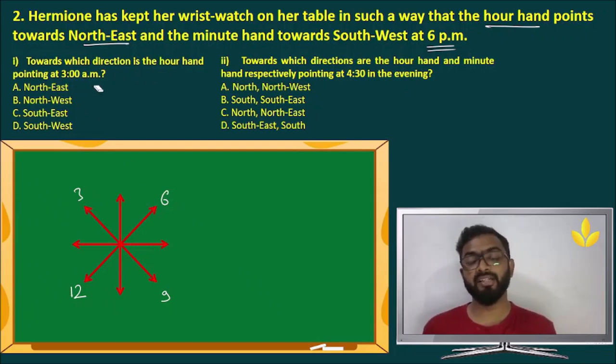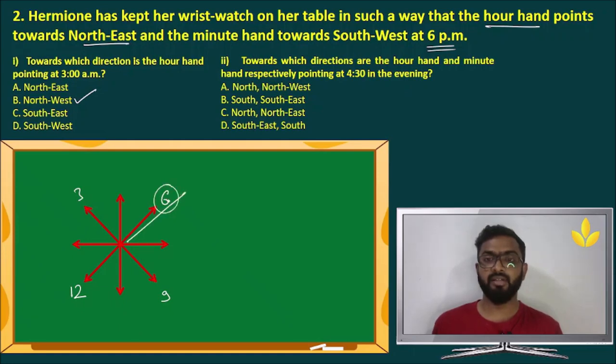Now, the questions. So the watch is kept in such a way that the 12 is here, 6 is here like that. Towards which direction is the hour hand pointing at 3 a.m.? 3 a.m. the hour hand will point at 3. That is in this direction. That is northwest. Answer is B. Question number two. Towards which directions are the hour hand and minute hand respectively pointing at 4.30 in the evening? Always remember, always think about the minute hand first. At 4.30, the minute hand is at 6. This is the minute hand. And this is what direction? This is northeast direction. And if you look at this, for the minute hand, these are the answers. And northeast is there and only one such option. So the answer is northeast. That's it.